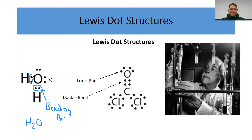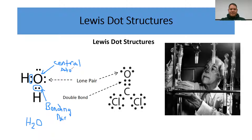Notice that the hydrogens are not bonded to one another, but the hydrogens are actually bonded to the oxygen. Oxygen is in the middle — we call it the central atom. The central atom is essentially the atom that all the other elements are bonded to and surrounded by.